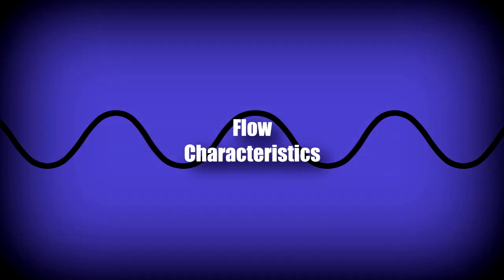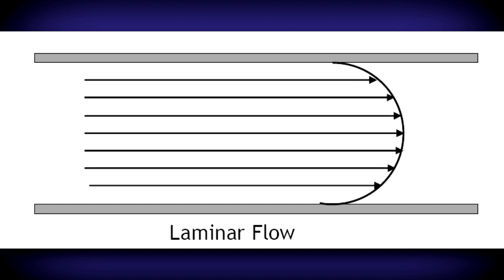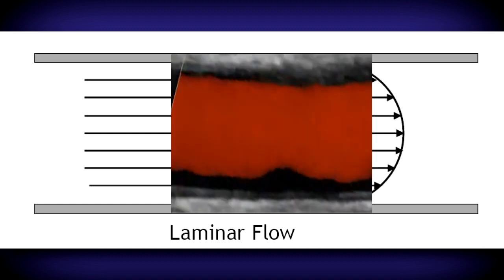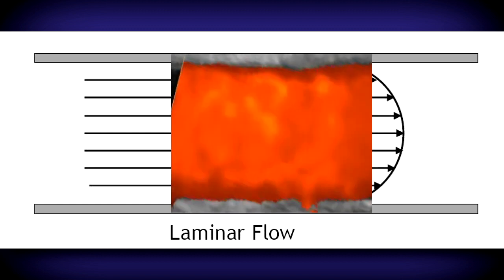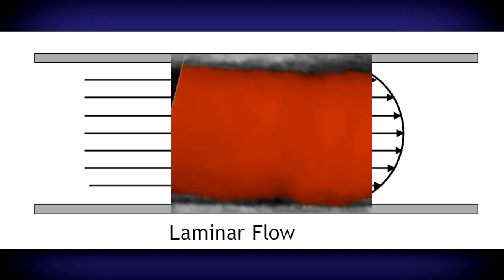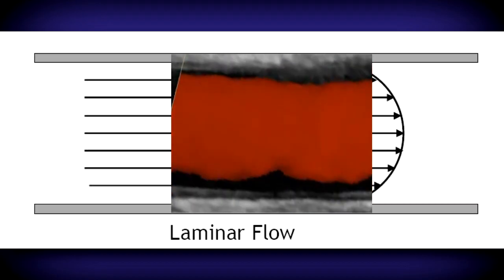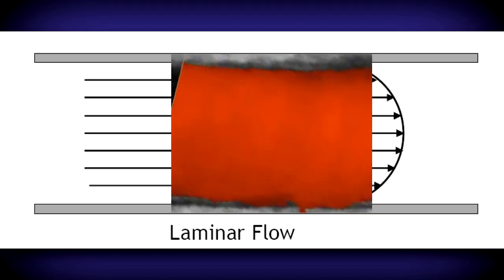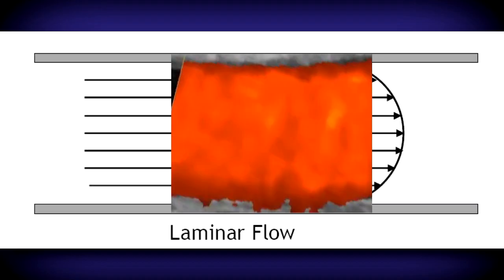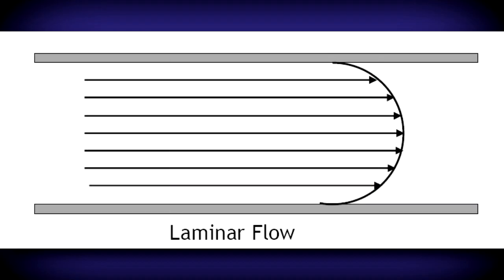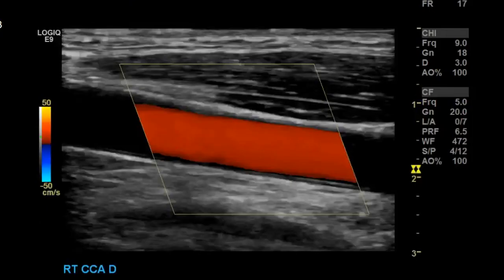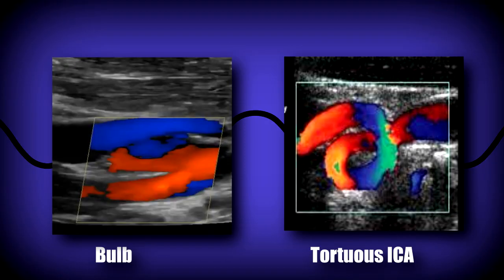Flow characteristics in normal arteries are described as laminar, which means that blood cells move parallel to the vessel walls and move faster at the center of the stream than at the wall. The reason for the slower flow near the wall is friction. Laminar flow is also called parabolic flow. Flow through the common carotid artery is usually laminar, though this is not true at the bulb or in cases of tortuous vessels, which can cause turbulent flow.